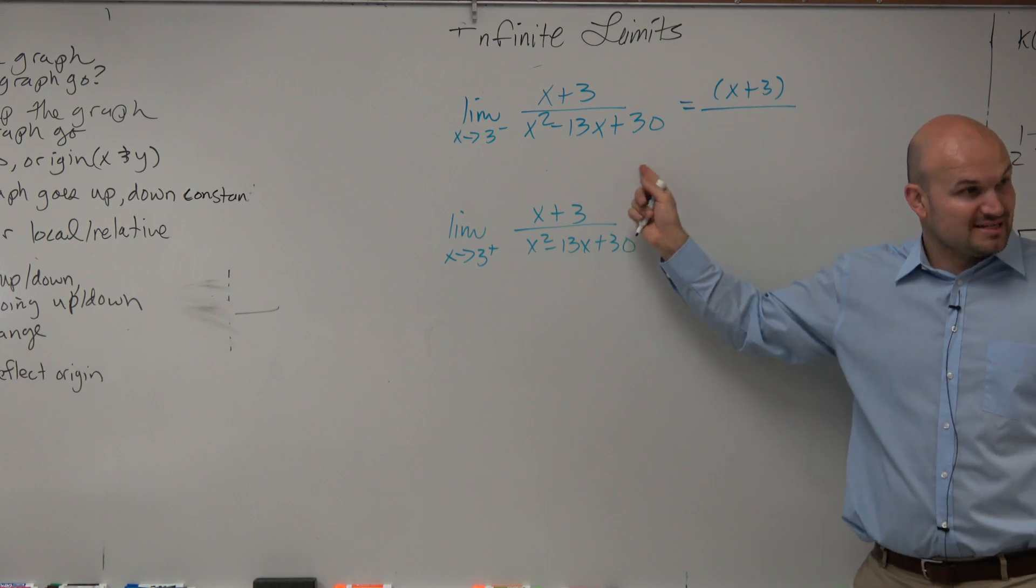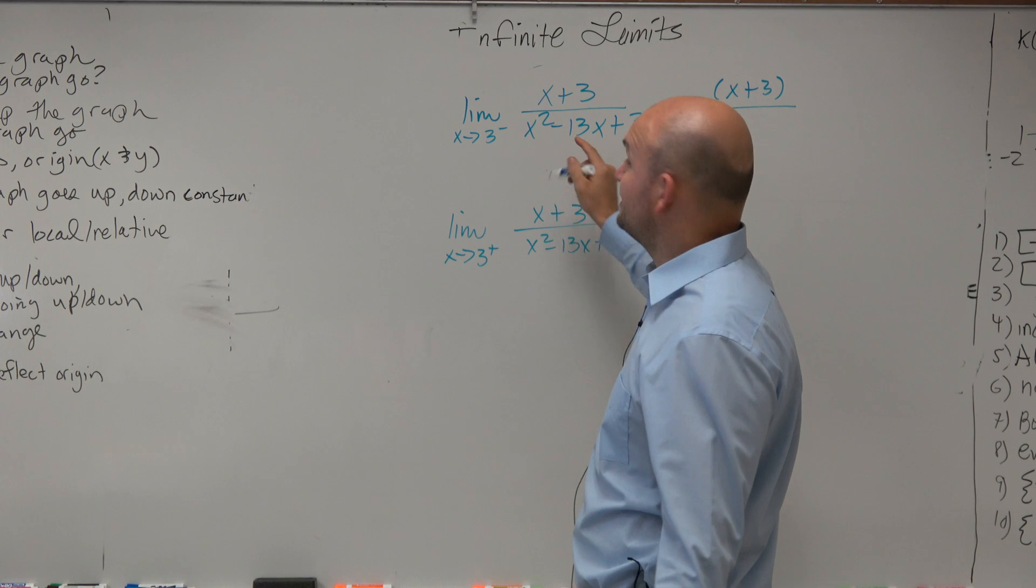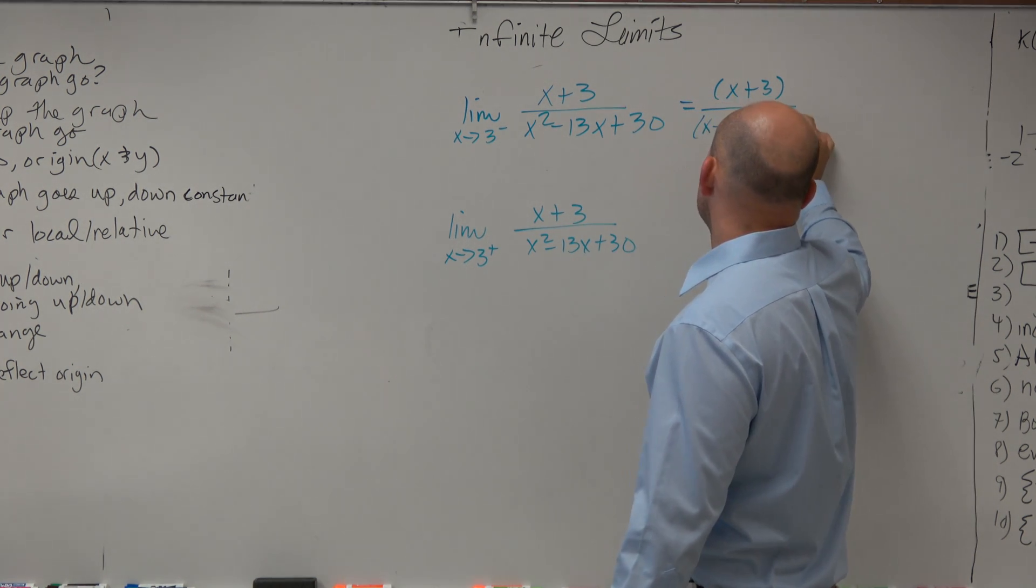Right, to multiply to give me positive 30, they both have to be negative. And because they're going to add to give me negative 13, so I got x minus 10 times x minus 3.